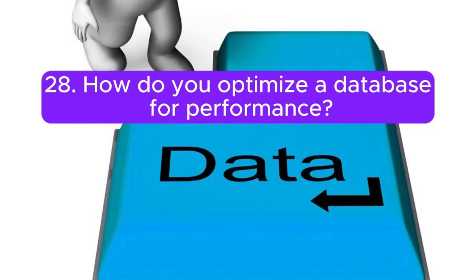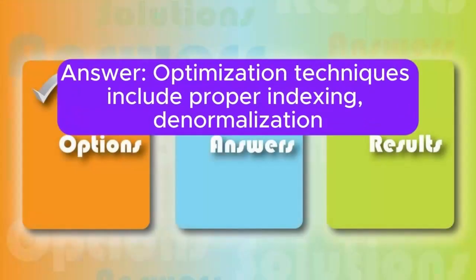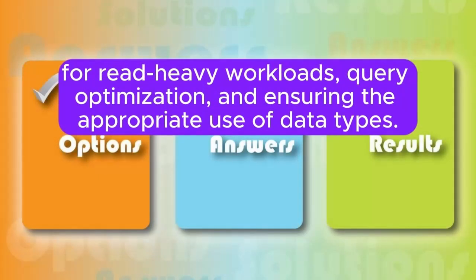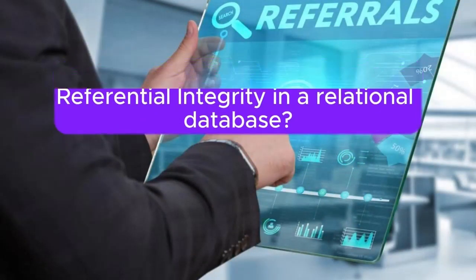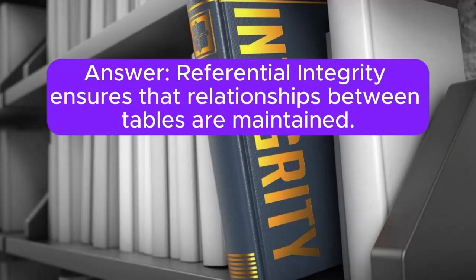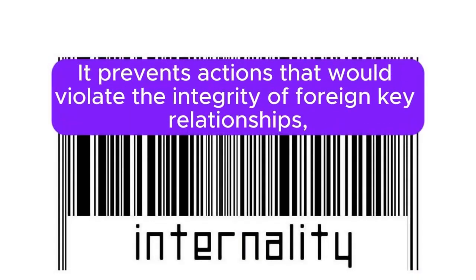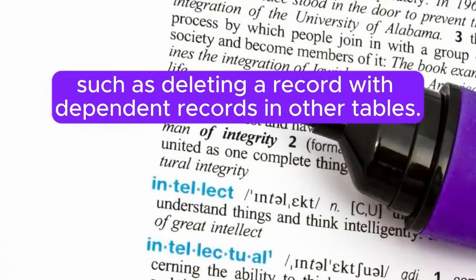28. How do you optimize a database for performance? Answer: Optimization techniques include proper indexing, denormalization for read-heavy workloads, query optimization, and ensuring the appropriate use of data types. 29. What is the significance of referential integrity in a relational database? Answer: Referential integrity ensures that relationships between tables are maintained. It prevents actions that would violate the integrity of foreign key relationships, such as deleting a record with dependent records in other tables.